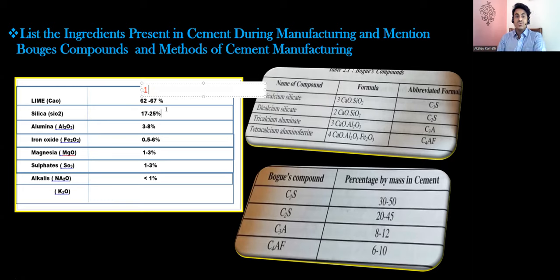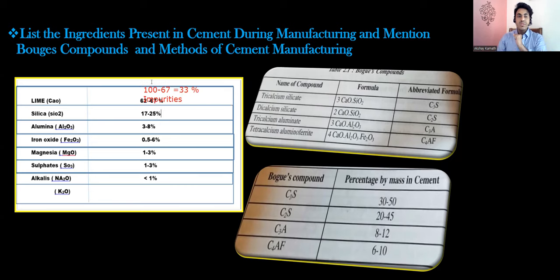So I've taken 62 to 67 percent lime — out of 100, only 67 percent. The remaining 33 percent is where we add impurities. These impurities are nothing but silica, alumina, iron oxide, magnesia, sulfates, and alkalis. This is exactly the chemical composition of the cement. If I don't add silica, alumina, iron oxide and all, this becomes pure lime. But by restricting lime to 62 to 67 percent and adding these impurities, my cement gets ready.